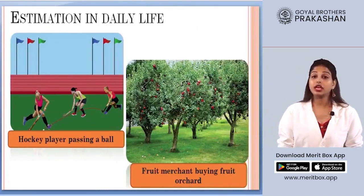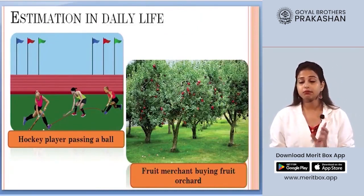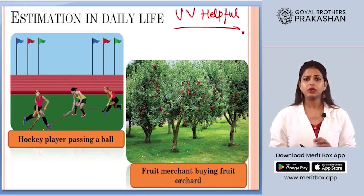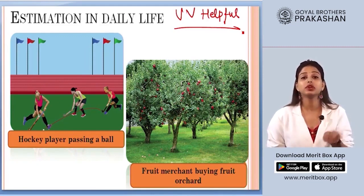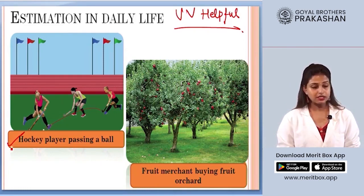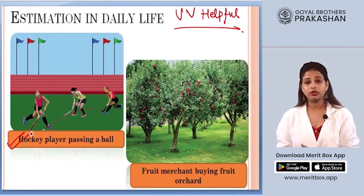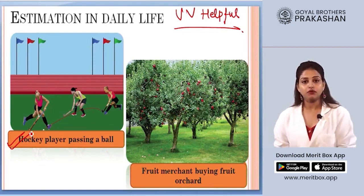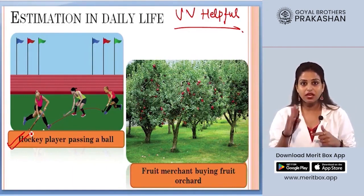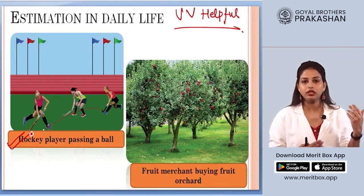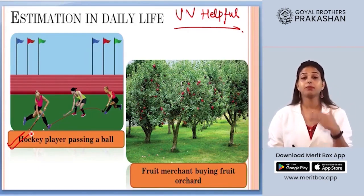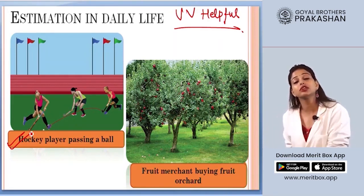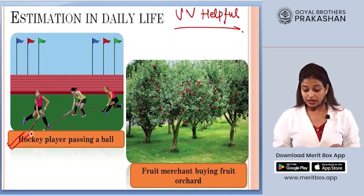There are some cases where estimation is very helpful even though it is not reliable — situations where you cannot measure and must make very quick decisions. For example, in a hockey match, a player passing the ball to a fellow player cannot stop to use a measuring tape to check the distance. The player's mind, through practice, estimates how far the fellow player is and how to pass the ball accurately.